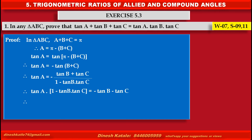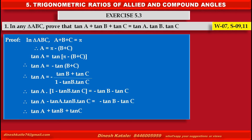Therefore, by transposing the terms, we get tan A minus tan A tan B tan C is equal to minus tan B minus tan C. After transposing, we get tan A plus tan B plus tan C is equal to tan A tan B tan C.